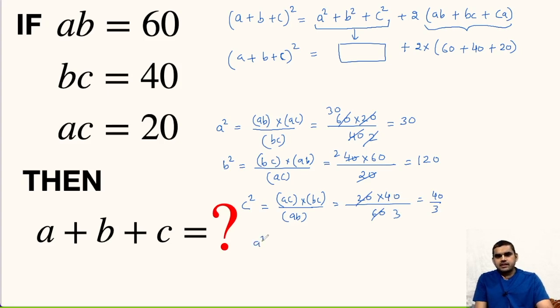Now we have to find A squared plus B square plus C square. This will be 30 plus 120 plus 40 upon 3. So 30 plus 120 is 150 plus 40 upon 3.